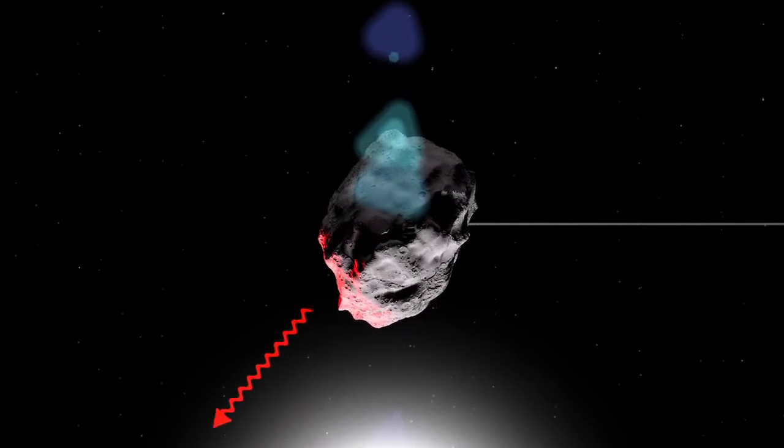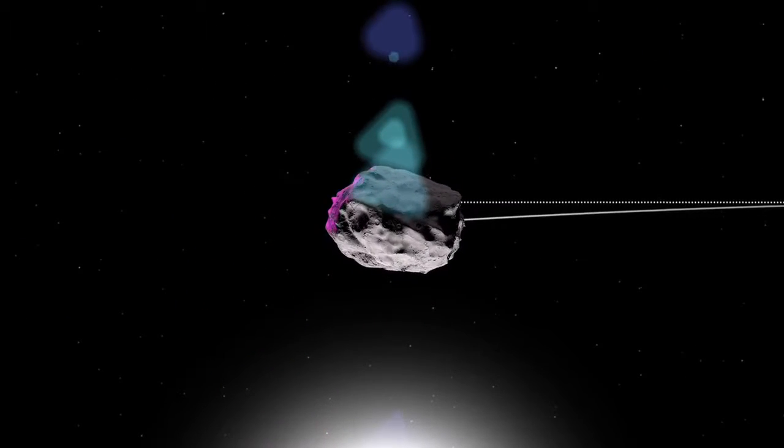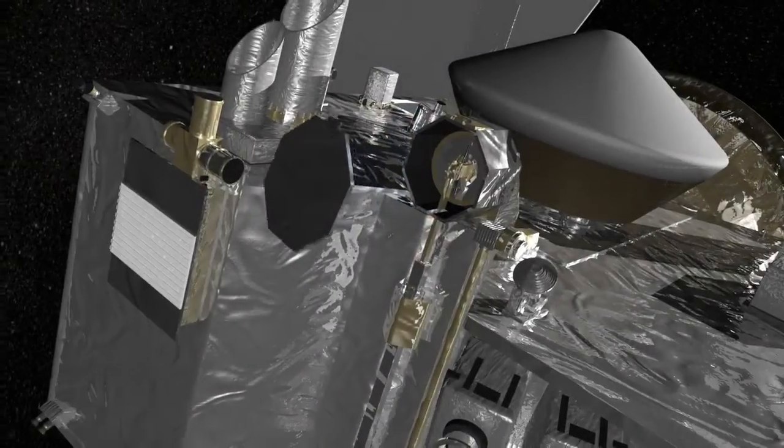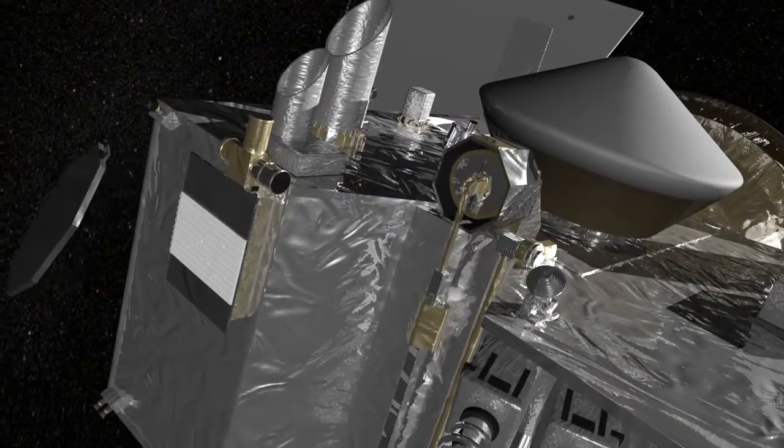This includes deviations caused by heating and cooling from sunlight, and it will allow them to pick a site for OSIRIS-REx's primary mission.